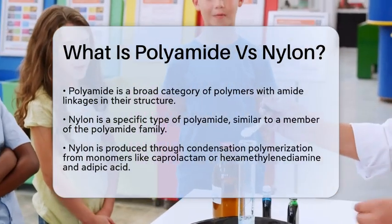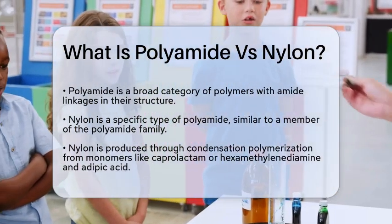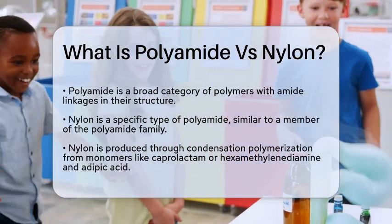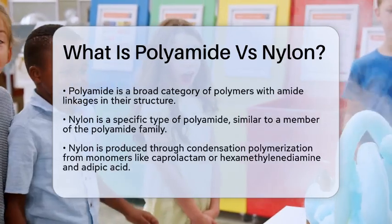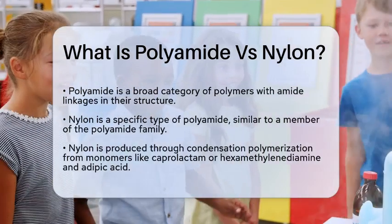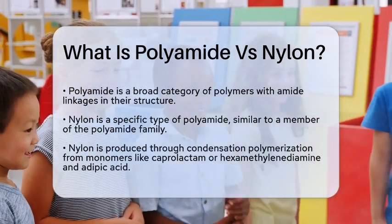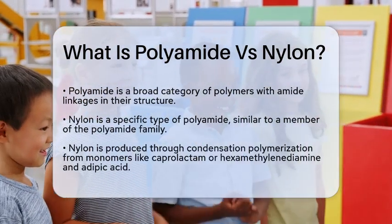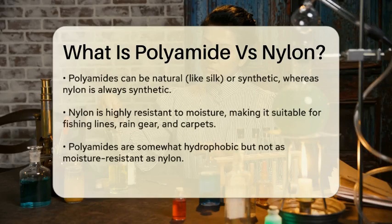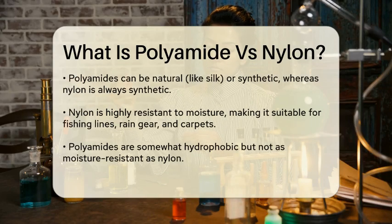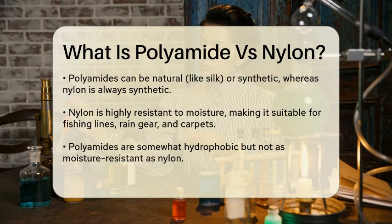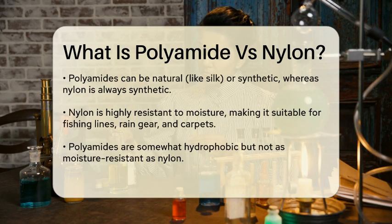Nylon, on the other hand, is a specific type of polyamide. It's like saying nylon is a member of the polyamide family. Nylon is made through a process called condensation polymerization, where monomers like caprolactam or hexamethylenediamine and adipic acid combine to form the polymer chain. One key difference is that polyamides can be either natural or synthetic, while nylon is always synthetic.